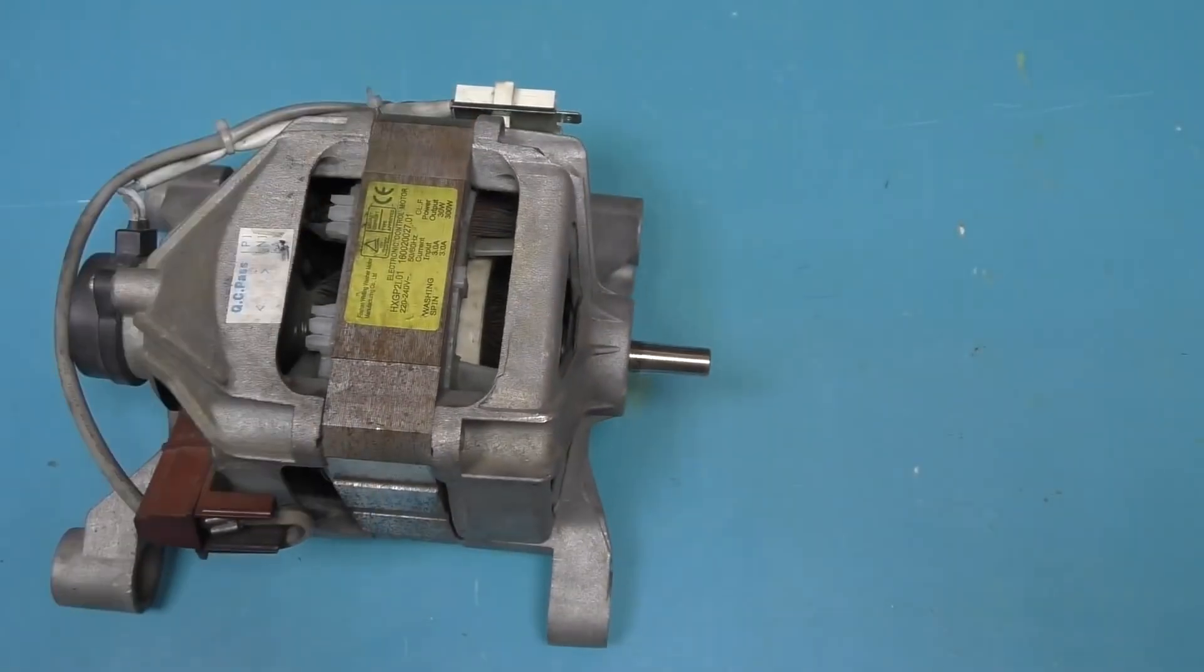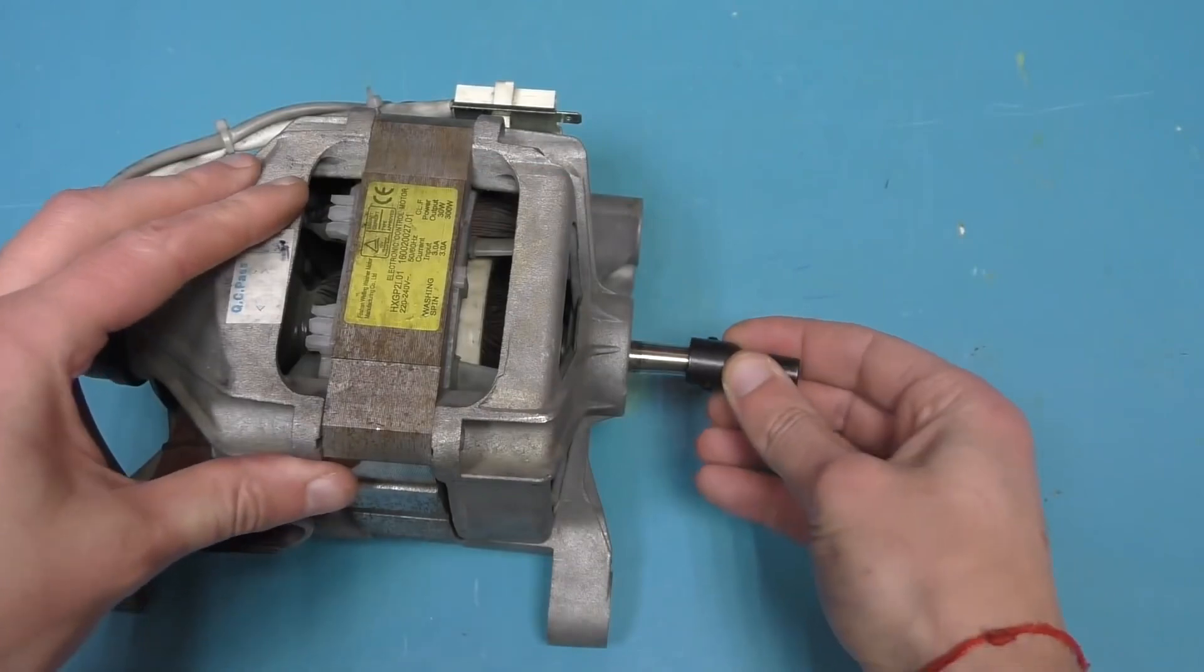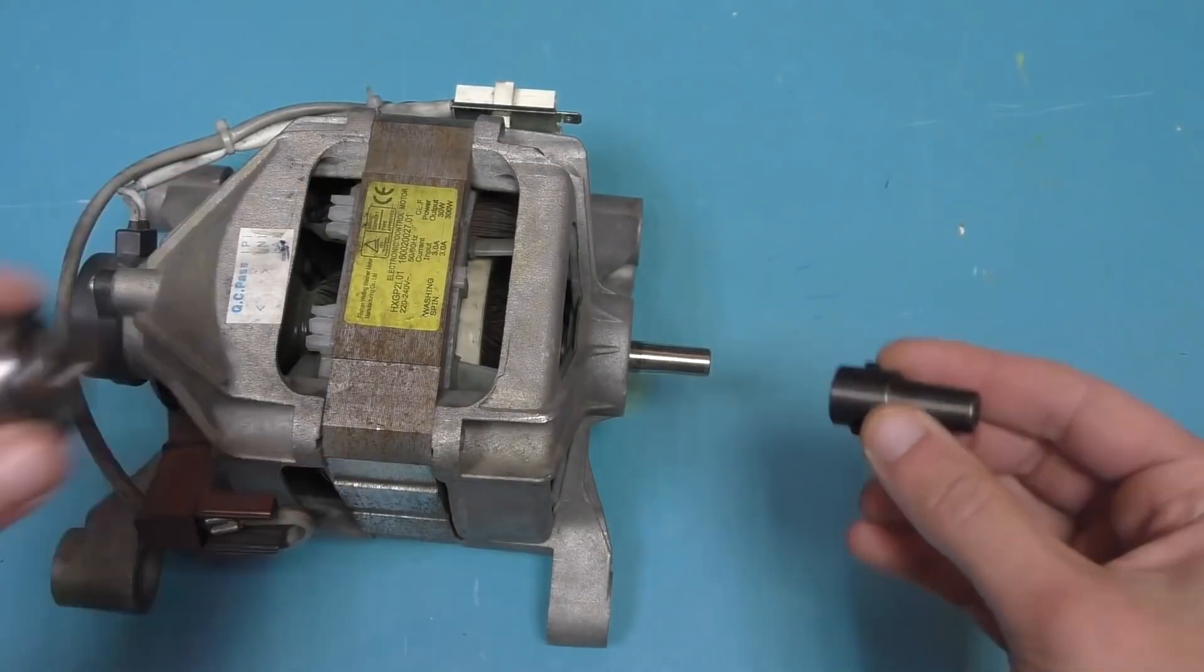Next, we need an adapter for the chuck with a taper on one side and a 10 millimeter hole on the other. As shown, it fits onto the shaft.